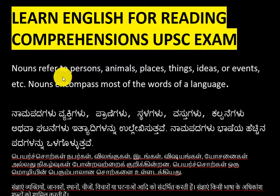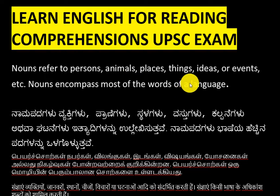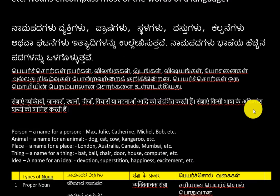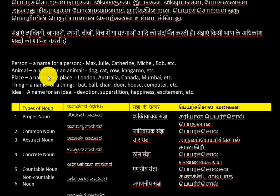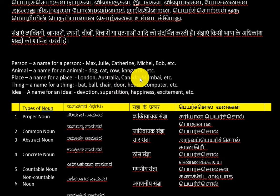We'll start with a noun today. A noun refers to a person, animal, place, thing, idea, or event. Nouns encompass most of the words in a language. For example, for a person, names like Max, Julie, Catherine, Michael, or Bob are nouns. For animals, names like dog, cat, cow, or kangaroo are nouns.